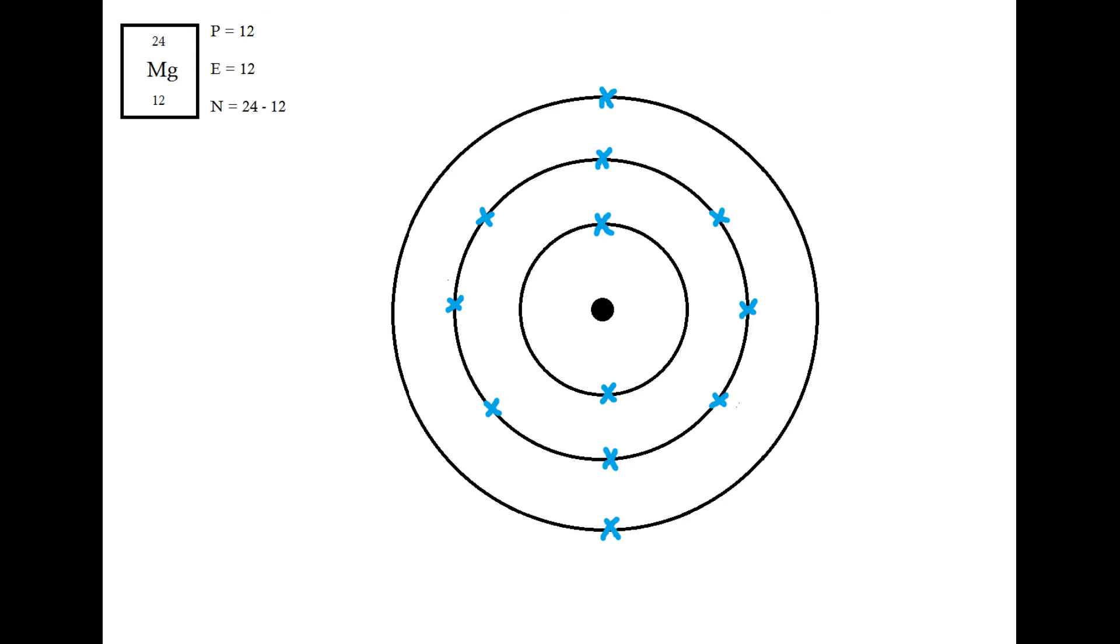So, because the magnesium is trying to get a full outer shell, it's not just going to lose one electron, it's actually going to lose both of these. And that could be to a single atom, say if this magnesium was going to react with some oxygen, or it could be to two separate atoms, if the magnesium was going to react with some chlorine.